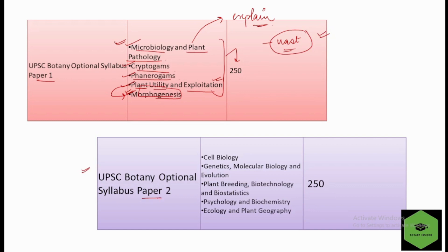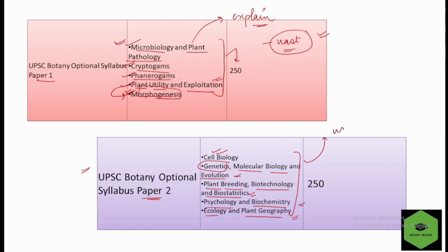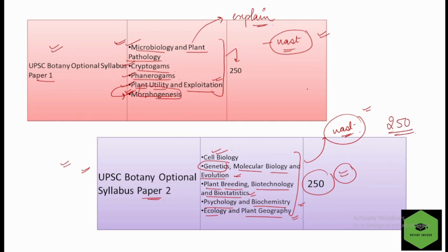In Paper 2, we have Cell Biology; Genetics, Molecular Biology, and Evolution; Plant Breeding, Biotechnology, and Biostatistics; Physiology and Biochemistry; and Ecology and Plant Geography. Again, all these topics are in themselves complete subjects and very vast, but here we have marked only the important pointers. Paper 2 is also for 250 marks in total, so with Paper 1 and Paper 2 combined you have 500 marks to score.